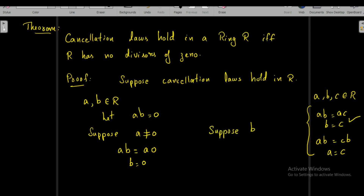Similarly, suppose B is not equal to zero. Then from AB = 0 we can write A·B = 0·B, since 0·B = 0. Using the right cancellation law, we conclude that A = 0. So if B ≠ 0 then A = 0. Therefore, if the product AB = 0 in R, then either A = 0 or B = 0 for any two elements A, B in R — meaning R has no divisors of zero.